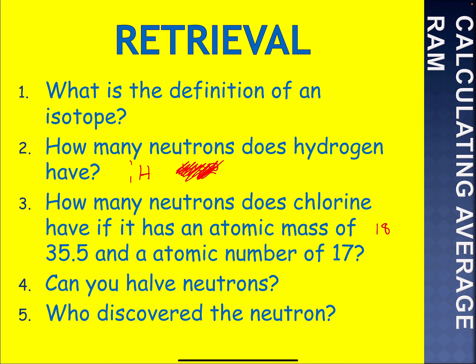Today's screencast is on calculating average relative atomic mass, where we'll take a look at isotopes and the abundance of each isotope to work out the relative atomic mass.